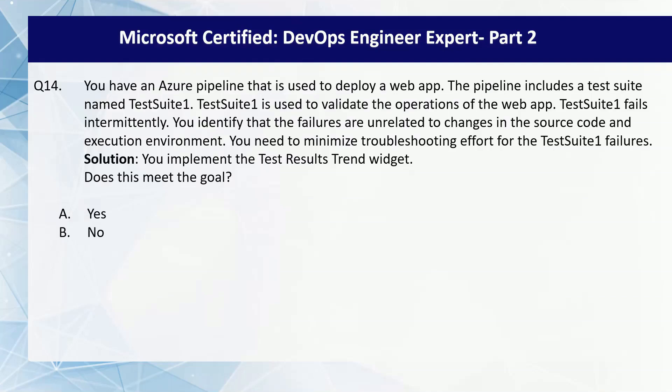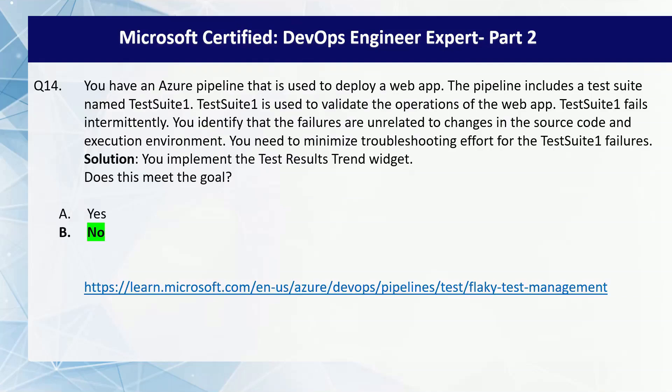The test results trend widget in Azure DevOps helps visualize test results over time, showing patterns and trends in test failures. However, while it provides useful historical data, it does not actively help minimize troubleshooting effort for intermittent test failures. You should instead use the flaky test detection feature in Azure DevOps to identify and quarantine unreliable tests. You can browse the link on screen to understand more about flaky tests and how to enable flaky test management.